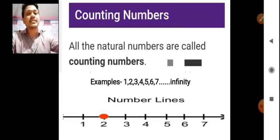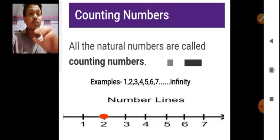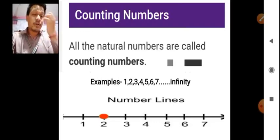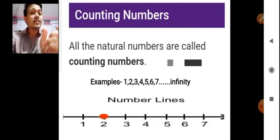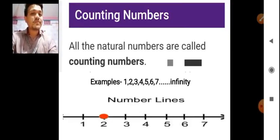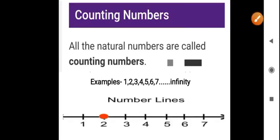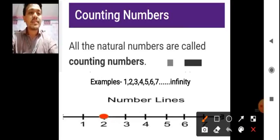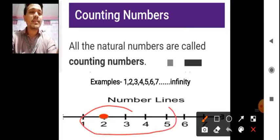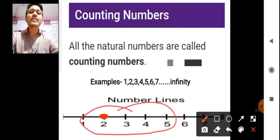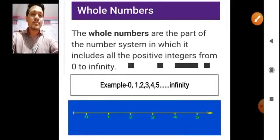So 1, 2, 3, 4, 5, 6 — 10 lakh, 10 lakh crore, million, 10 million, 10 crore — all these numbers are called counting numbers. But these numbers should be positive numbers, that is positive 1, positive 2. You can see in this number line here — these are all the counting numbers on the number line.